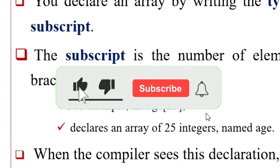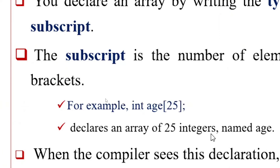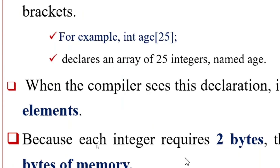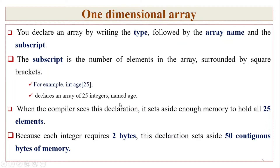For example: int edge[25] declares an array of 25 integers. The data type is int, the name of the array is edge, and the size is 25. This allocates enough memory to hold all 25 elements. An integer takes 2 bytes of memory.